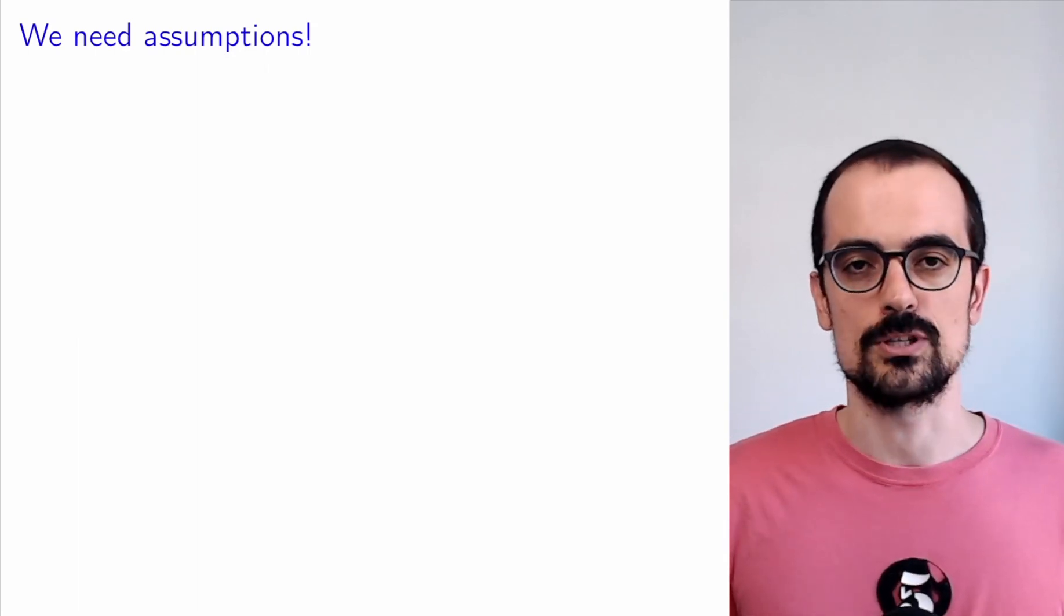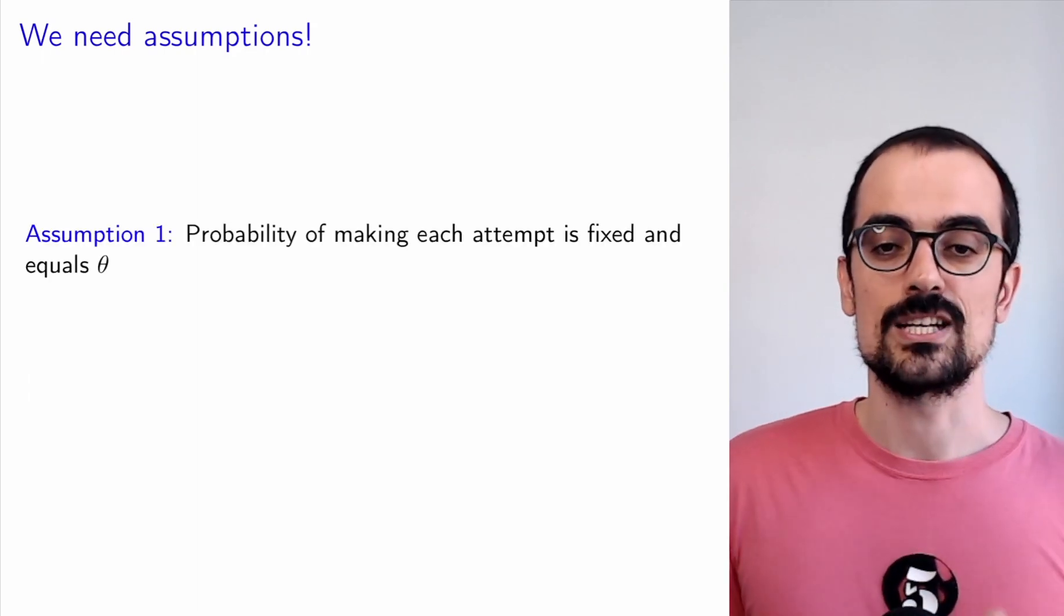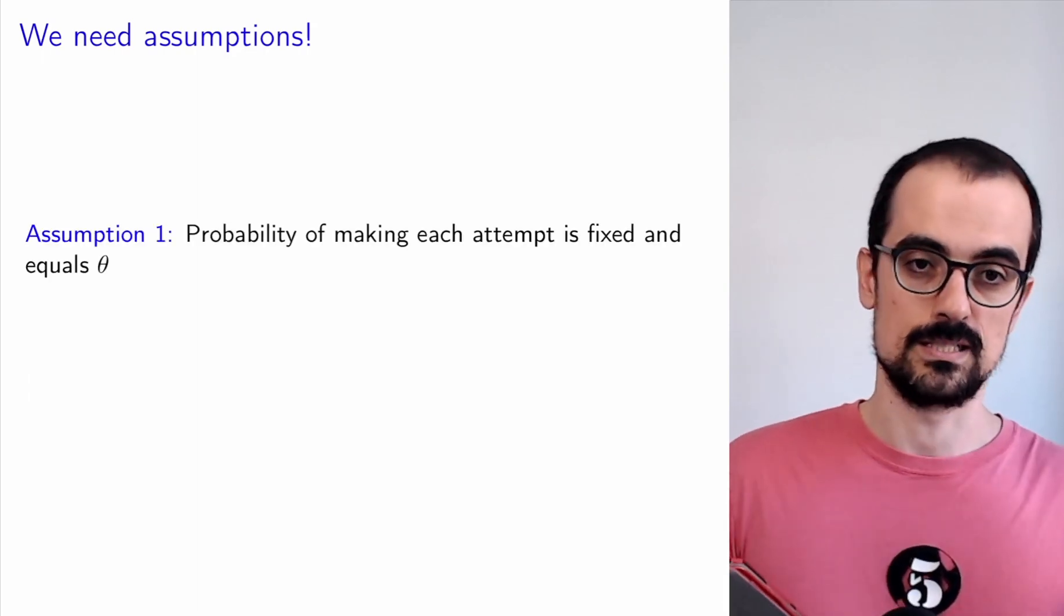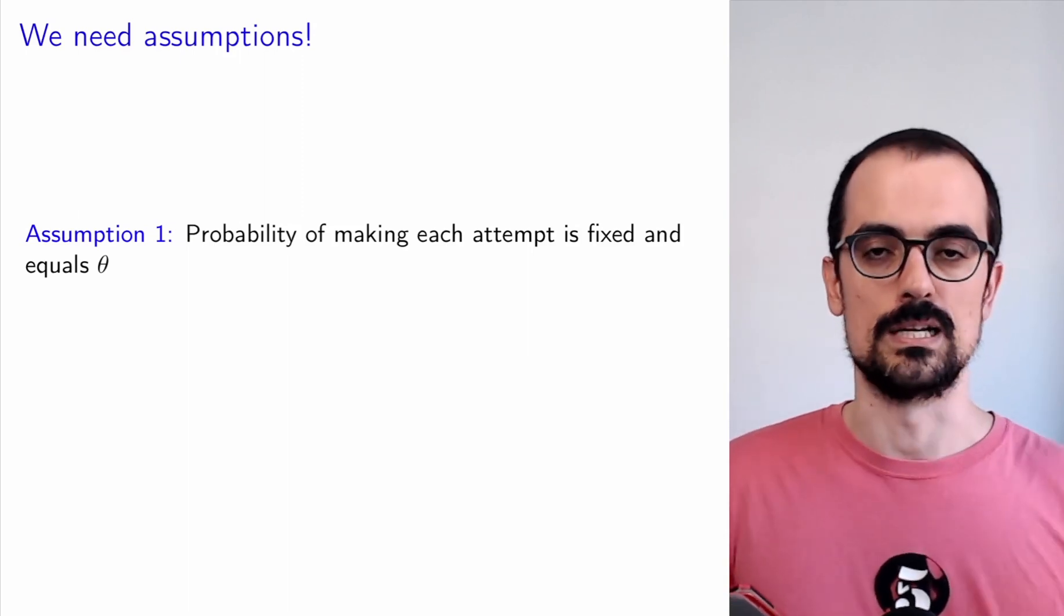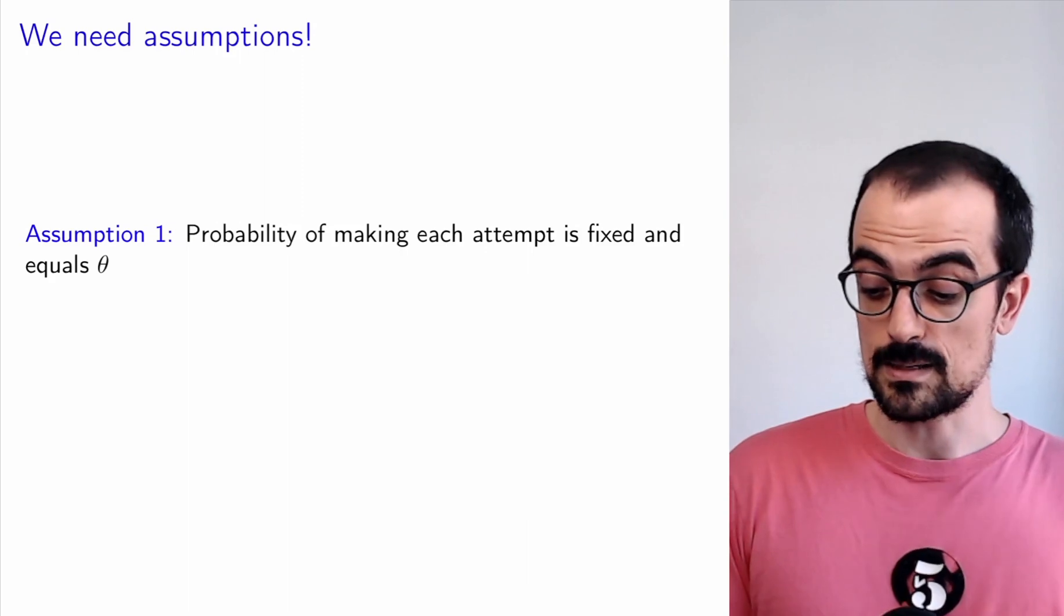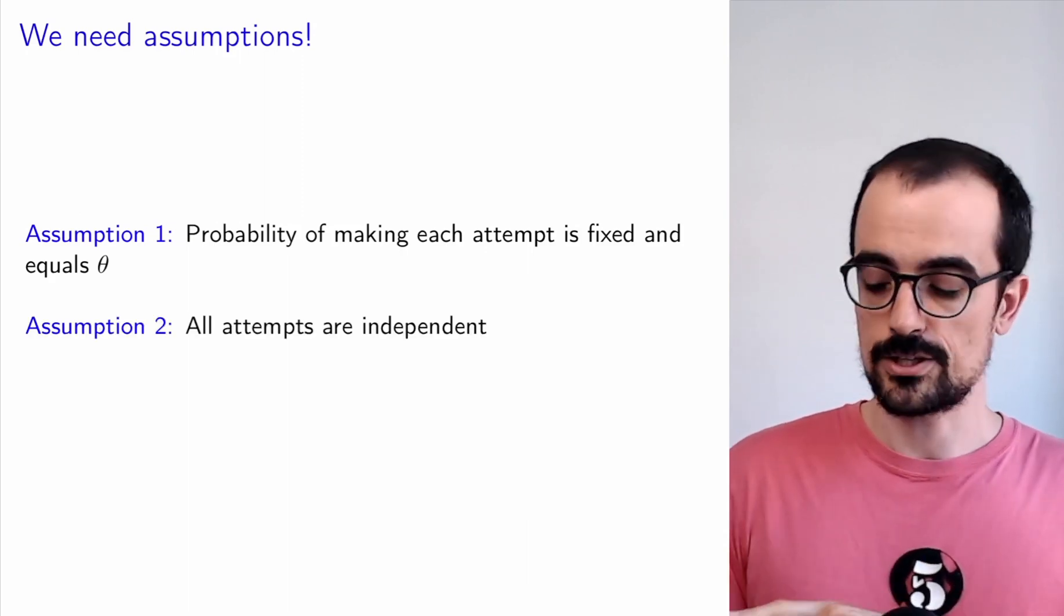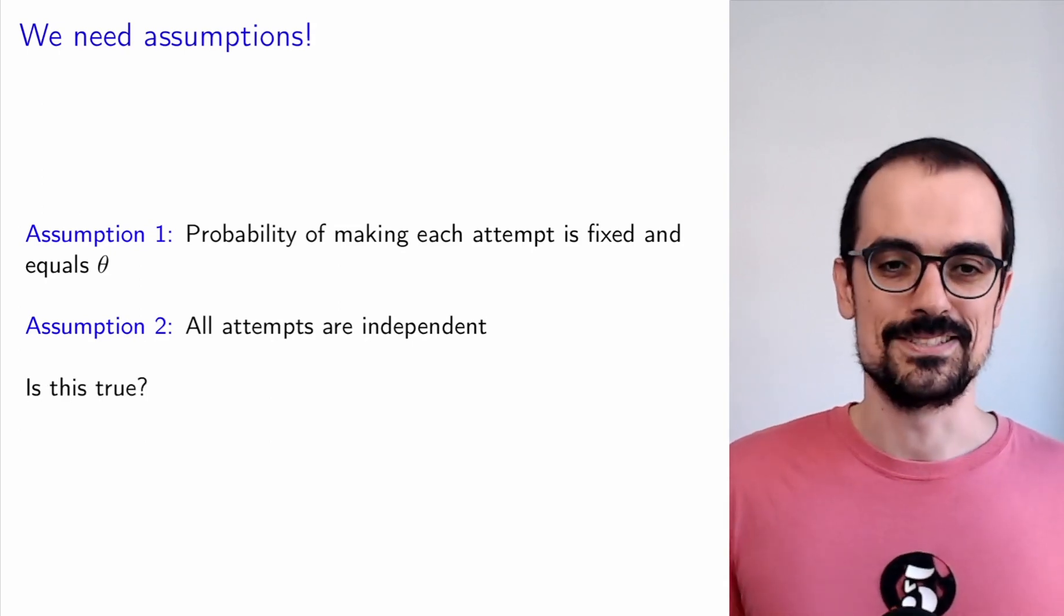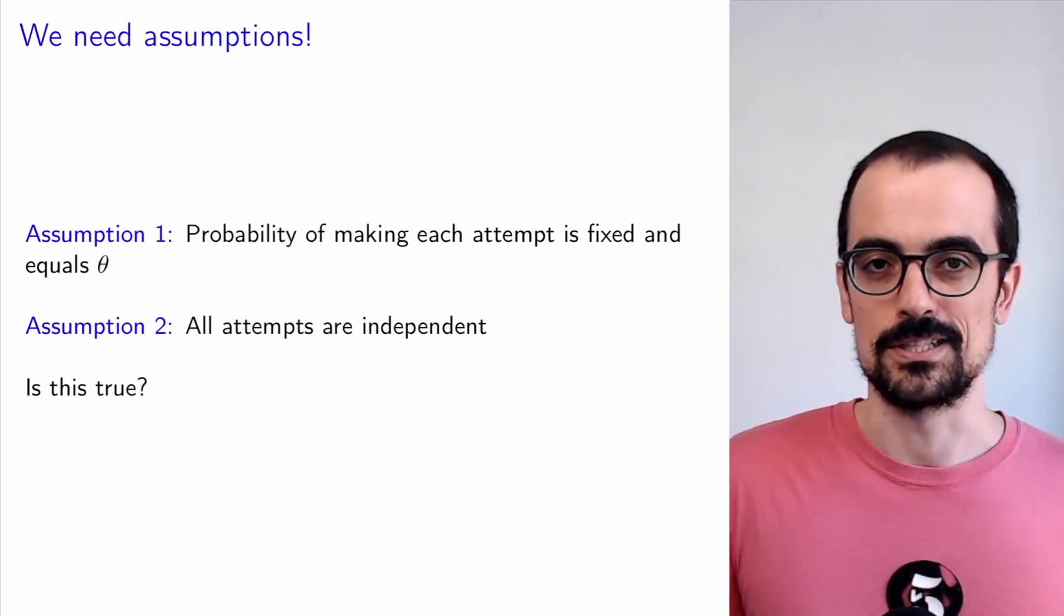We need assumptions. Without assumptions we're not going to be able to design a parametric model. We're going to make two assumptions. The first assumption is that the probability of making each attempt is the same. There's this probability theta. The second assumption is that all the attempts are independent.